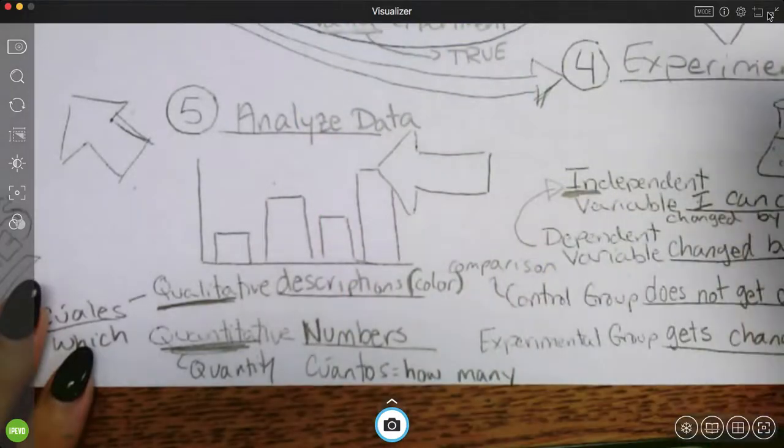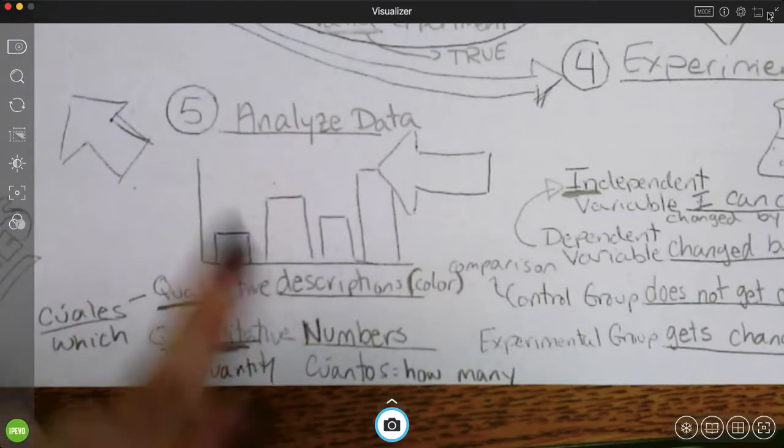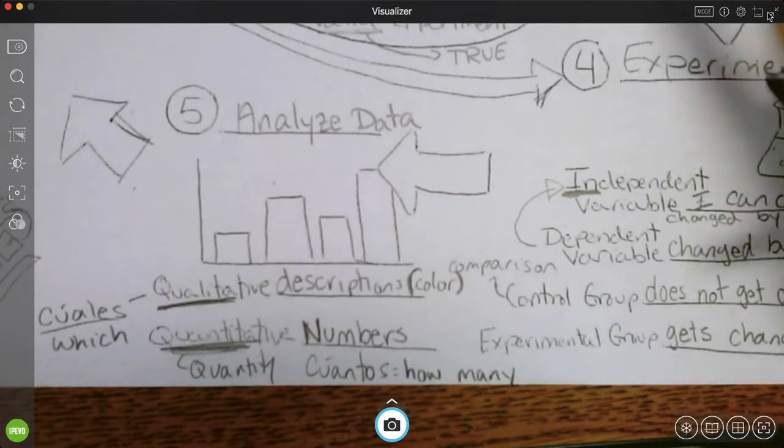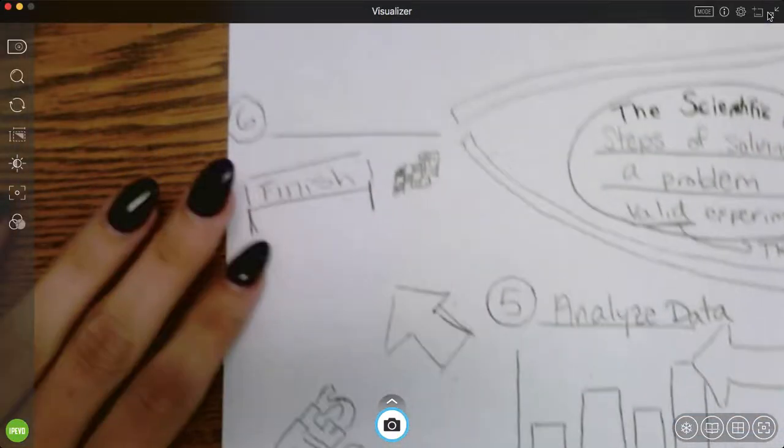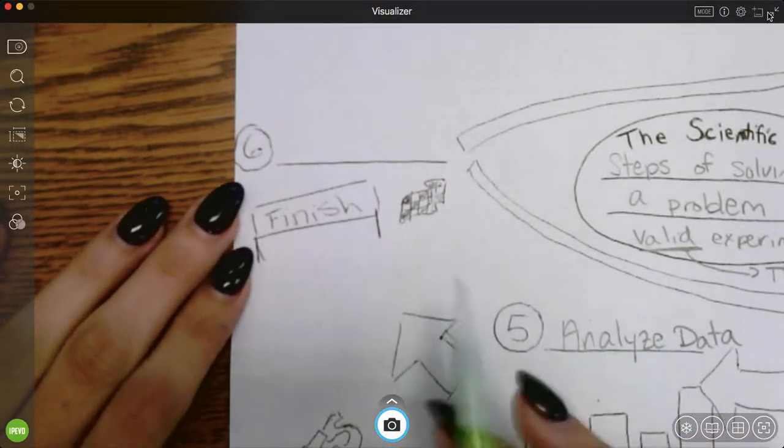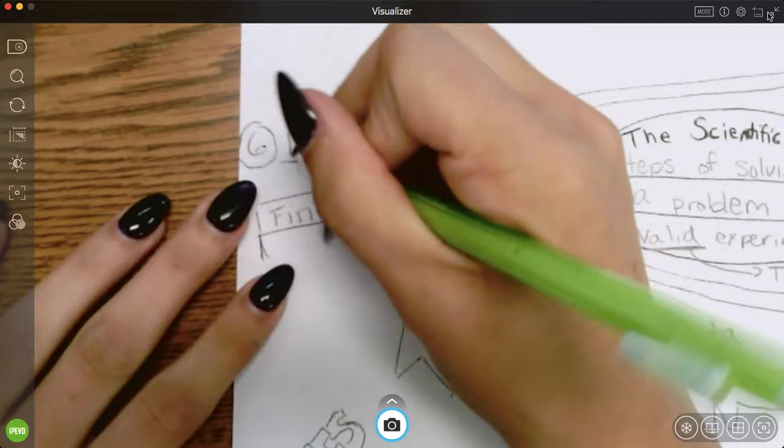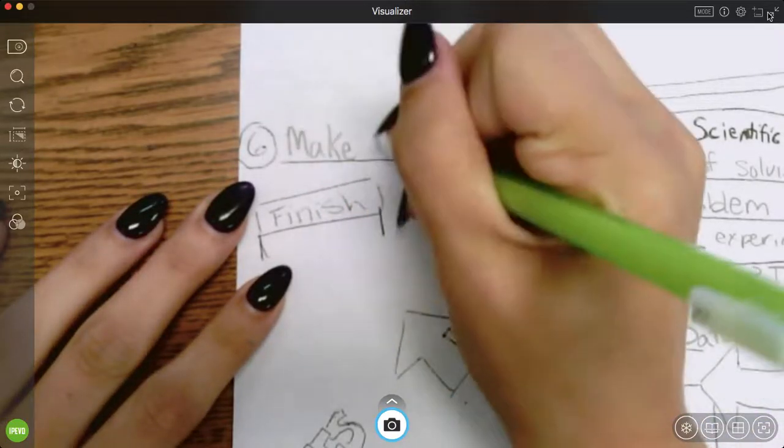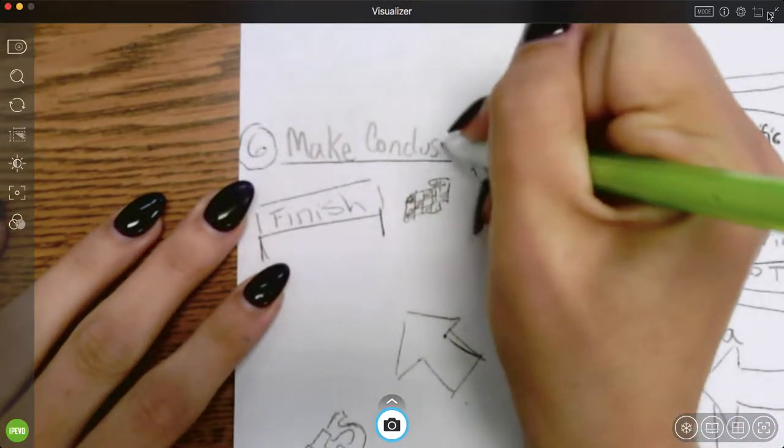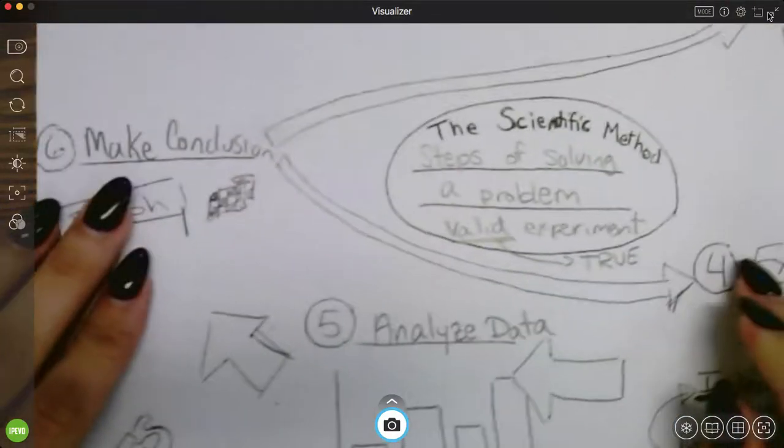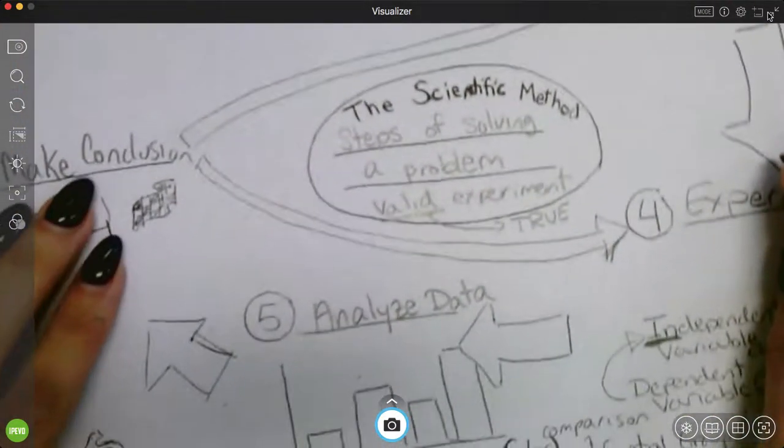So we've done our question. We did our research. We made our guess. We had our hypothesis. We did an experiment. I put the numbers in a graph so I can see it a little easier. And my last step, which is why it's here with a little checkered flag and a finish line, I'm going to make my conclusion. So my conclusion is going to be one of two things.